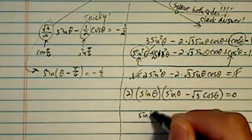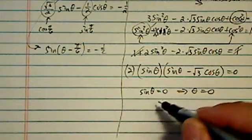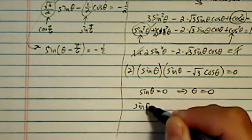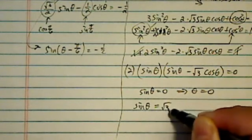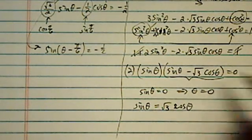And then I have sinθ here minus √3cosθ equal to 0. So two solutions are sinθ equal to 0, which is θ equal to 0. That's the easy one. Then let's take a look at what's the other one. Sinθ equal to √3cosθ.